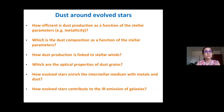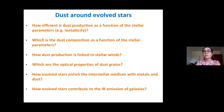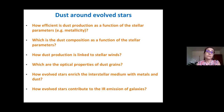First of all, how efficient is dust production and how does composition change as a function of the stellar parameters of the star? For example, a critical role is attributed to metallicity. How is dust production linked to stellar winds? We've already seen how dust is important for the development of mass loss and stellar winds, but we still don't know all the details.